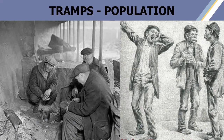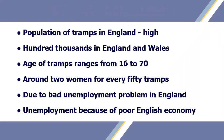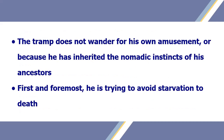The tramp population in England is very high. Their population is 100,000 in England and Wales. The age of the tramps ranges from 16 to 70, and we can find around 2 women for every 50 tramps. These people are more in number due to the bad unemployment problem in England. The tramp is unemployed as a result of the state of the poor English economy. The tramp does not wander for his own amusement or because he has inherited the nomadic instincts of his ancestors.